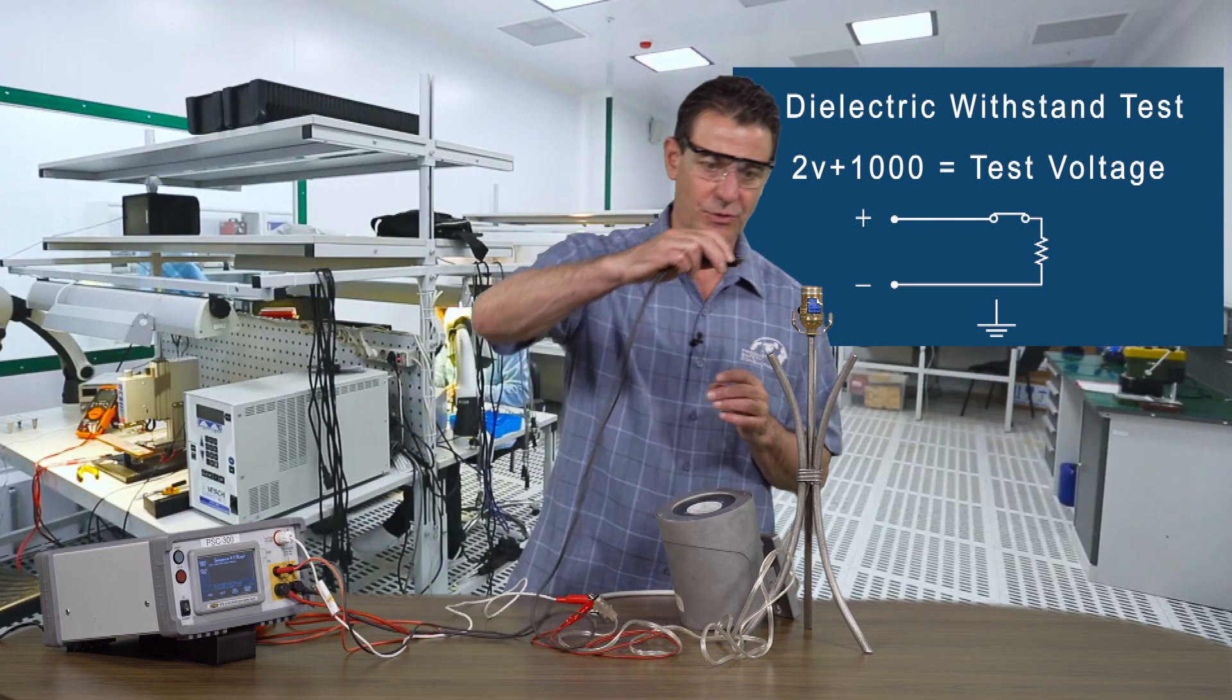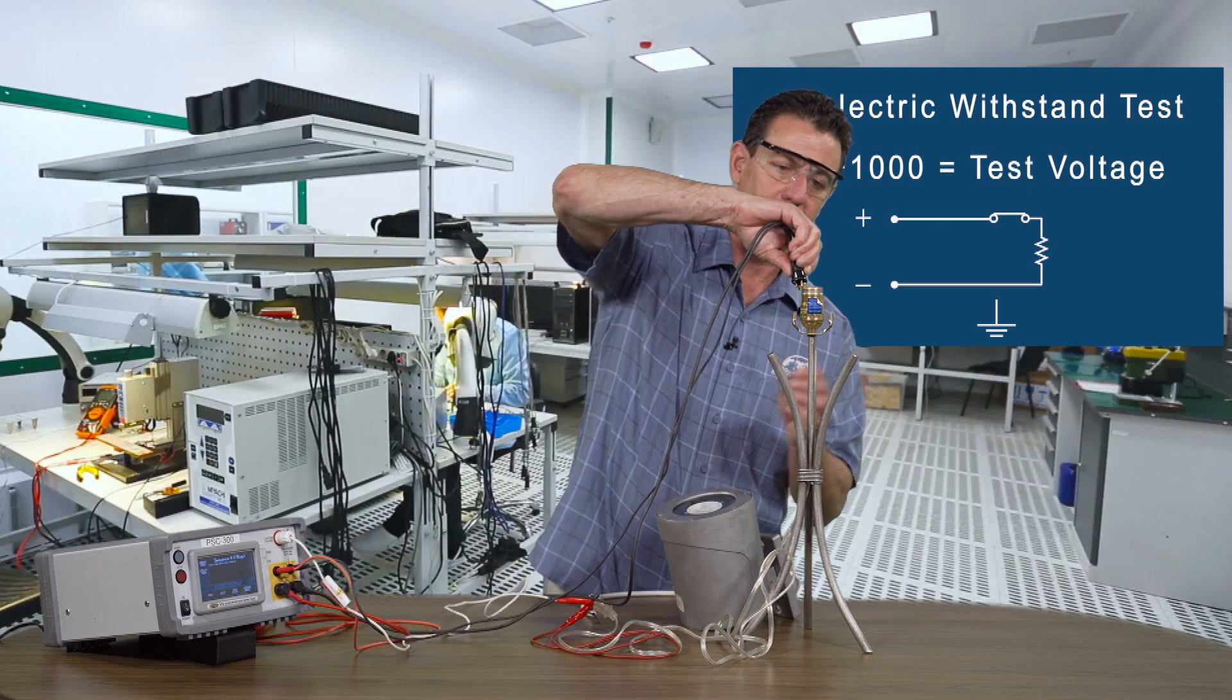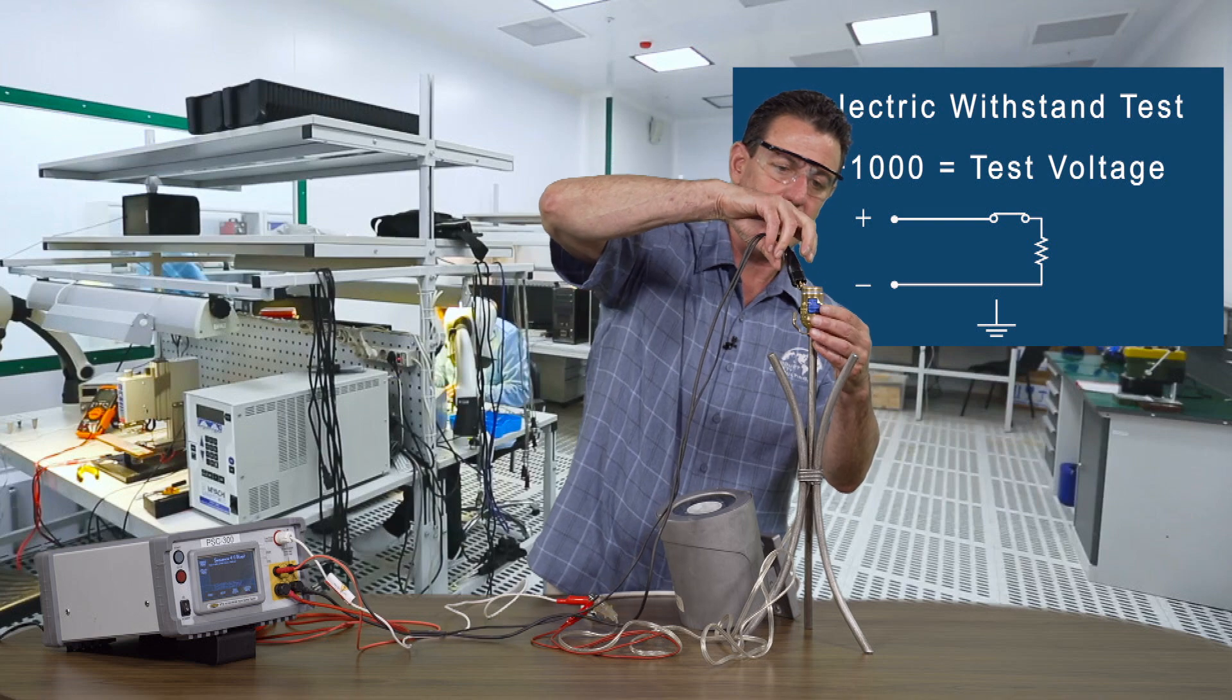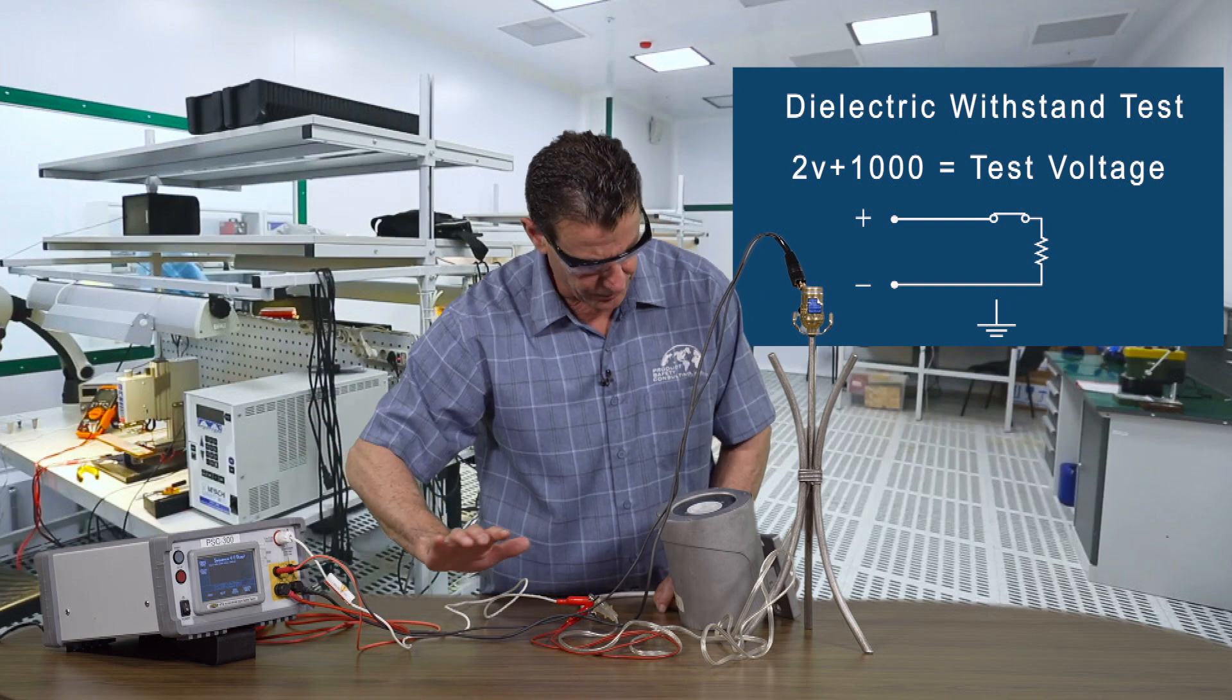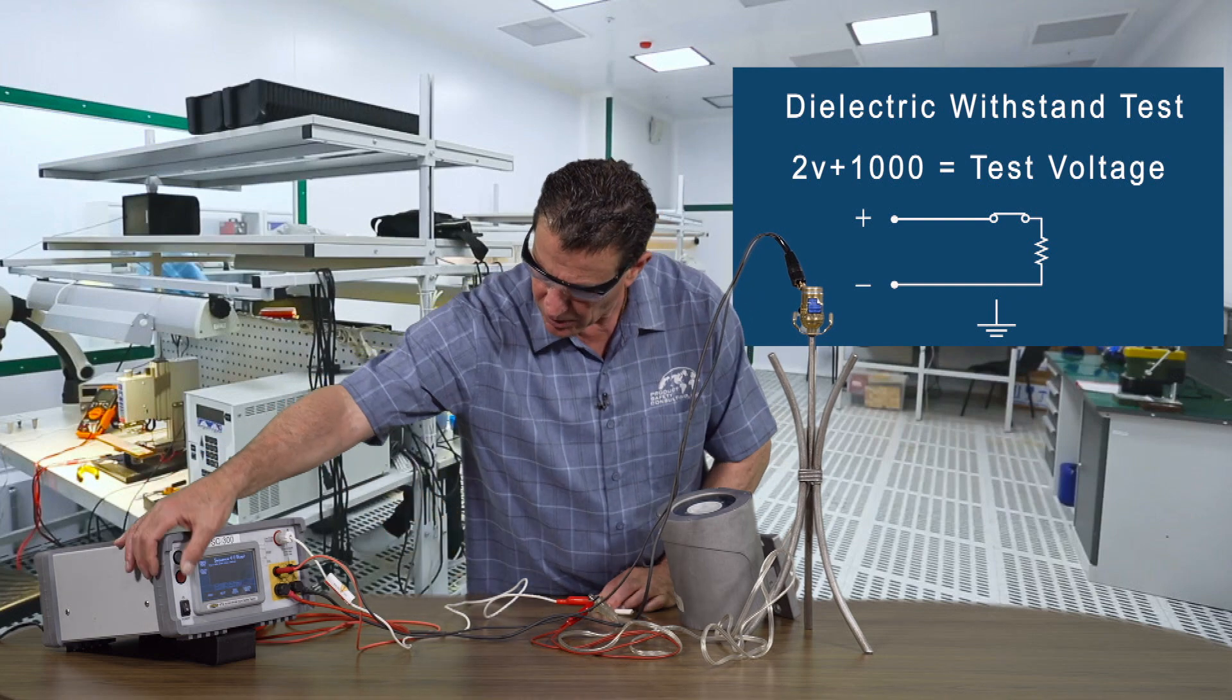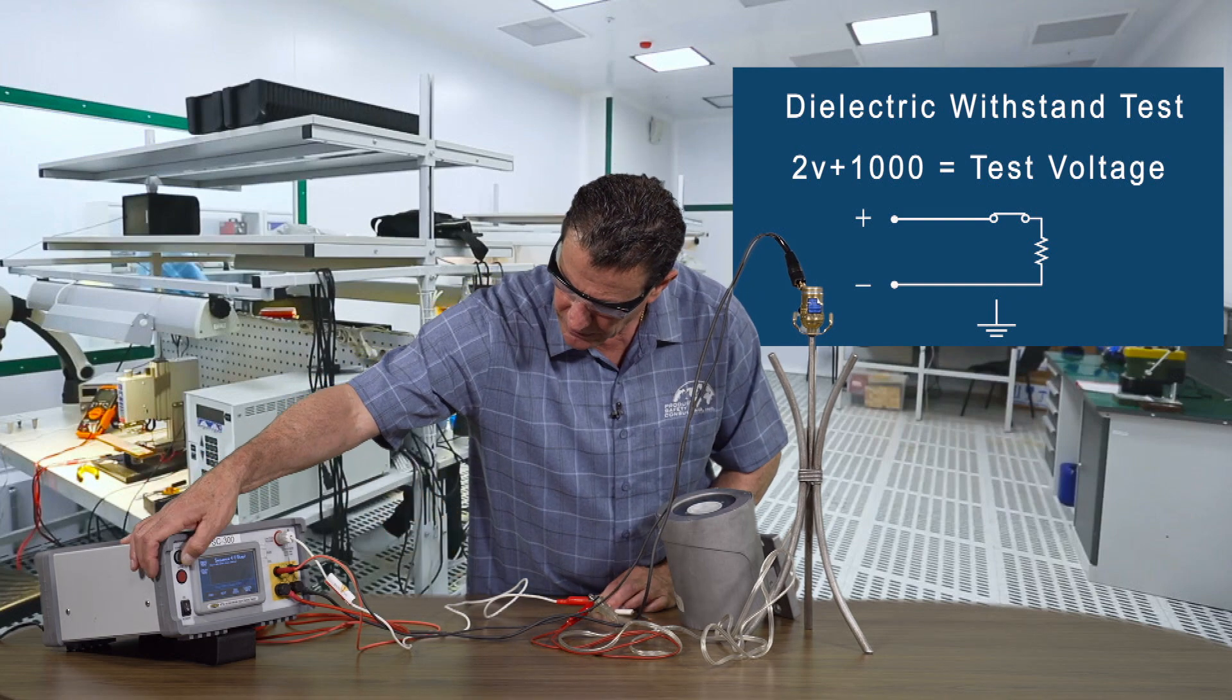Again it's 1200 volts. We're going to put our return lead on accessible dead metal and we make sure we're clean and good to go and we will start the test.